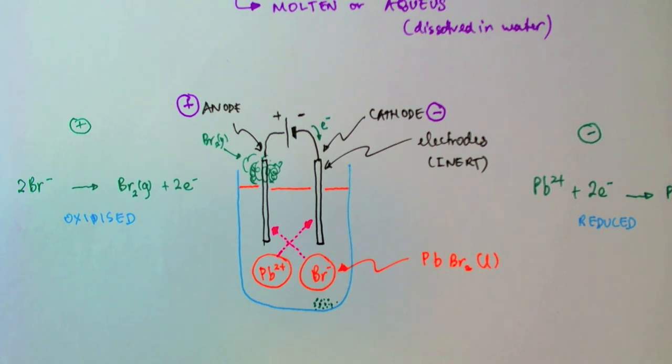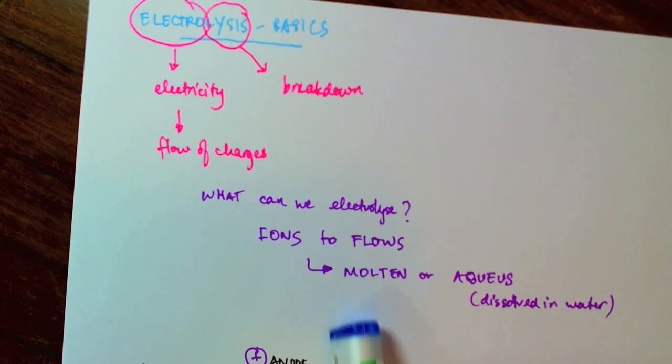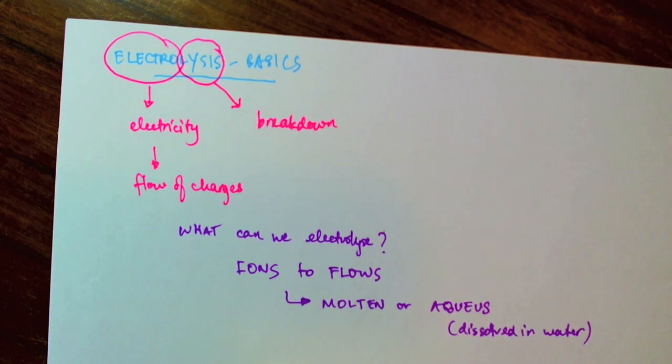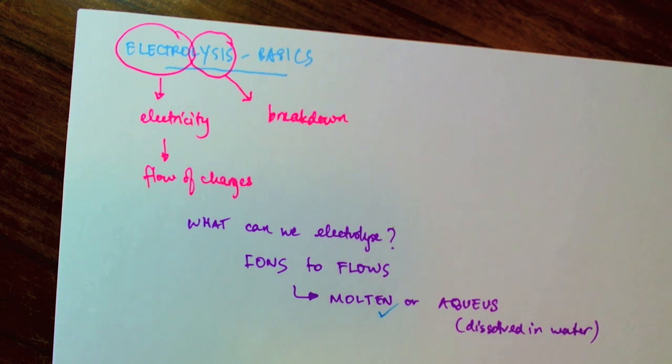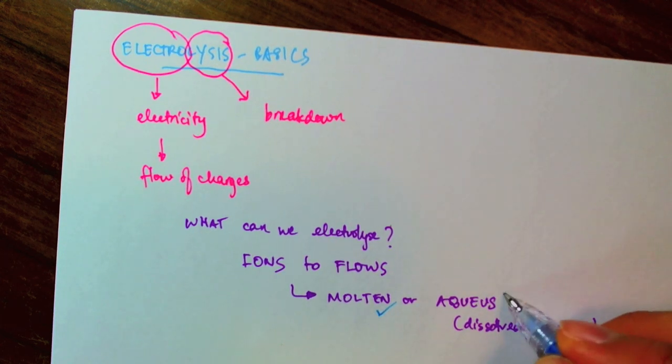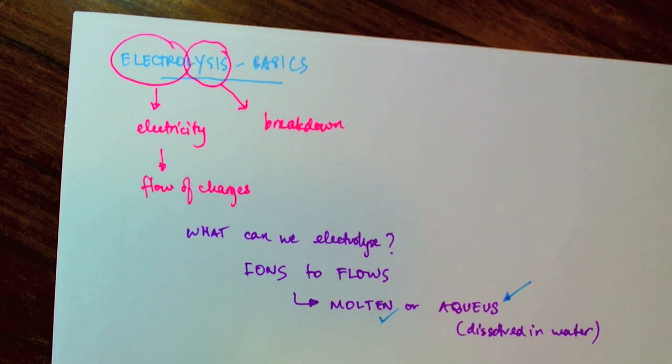So, in this video, we've talked about what electrolysis is. And we've seen an example of how you might actually electrolyze a molten substance in the lab. A molten substance. So, in the next video, we're going to talk about how you can electrolyze an aqueous substance.